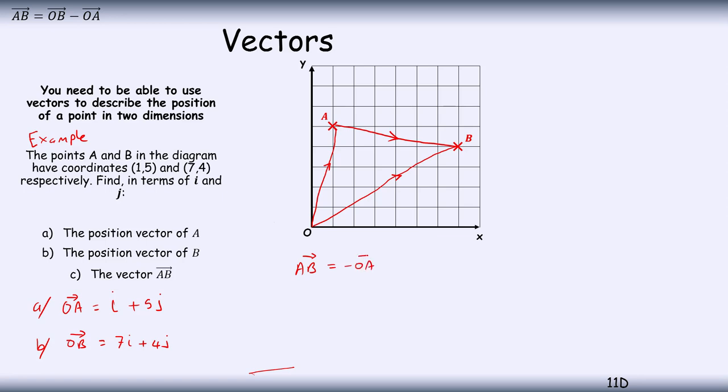So to find AB, I travel back down OA, so AB is given by negative OA plus OB. And so that's OB minus OA.